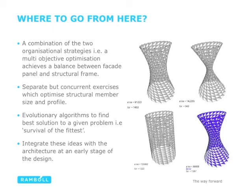Finally, where do we go from here? We get a combination of the two organizational strategies — a multi-objective optimization. We're going to look at evolutionary algorithms to find the best solution, for example through survival-of-the-fittest analysis. And finally, to integrate those ideas with architecture at the very early stages of design. Thank you very much.